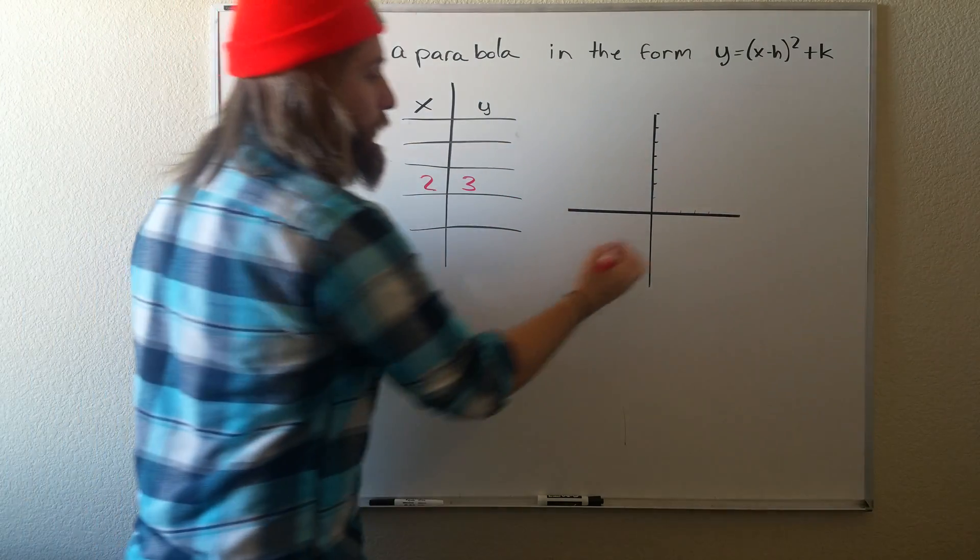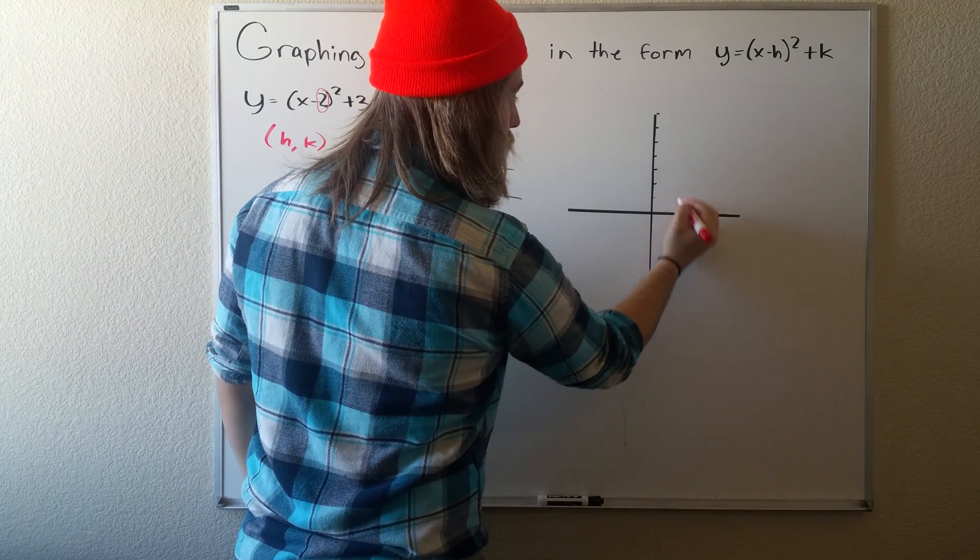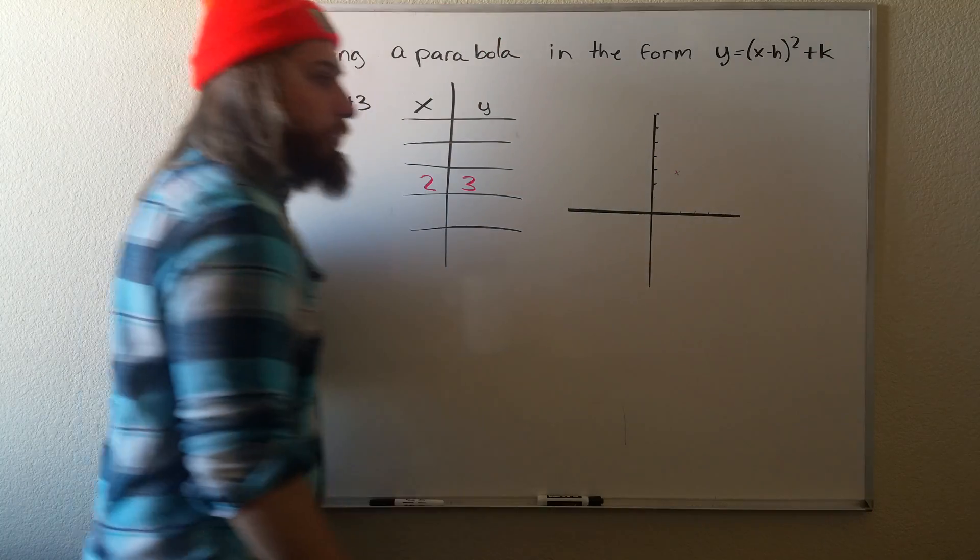So that's our vertex. If we go over on the graph, we can plot that. So we go 2 and then up to 3. So there's our first point.